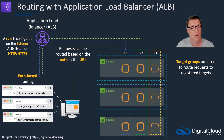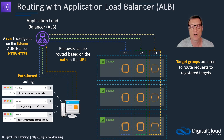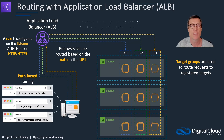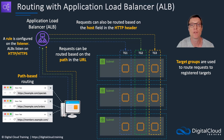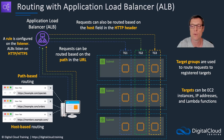With host-based routing, we use a different host header — for example, members.example.com — and the request is forwarded through to a specific target group. We can combine host-based routing and path-based routing, and there are several other mechanisms available for advanced request routing with the ALB. With host-based routing, we're routing based on the host field in the HTTP header, essentially the subdomain in this example. Targets for the ALB can be EC2 instances, IP addresses, or Lambda functions.